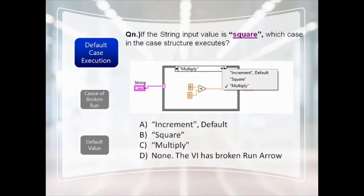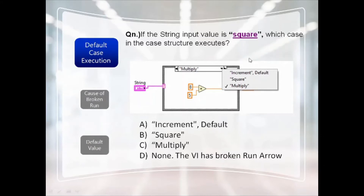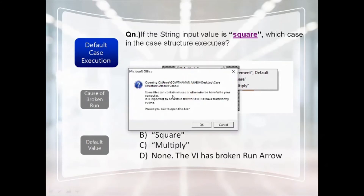For the CLAD exam, there are three important cases: default case execution, cause of broken run, and default value. The first is default case execution. For example, with three cases, if the string input is 'square' — but the case label has 'Square' with an uppercase S while the input is all lowercase — the case structure is case-sensitive. A mismatch means only the default case will be executed.